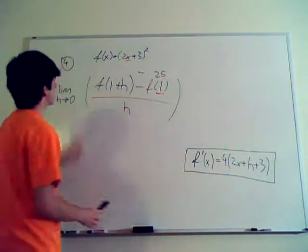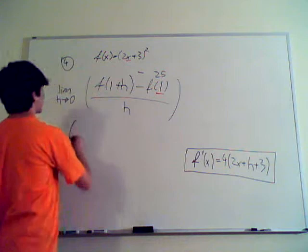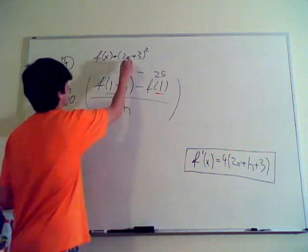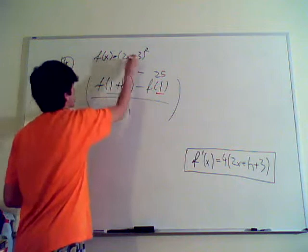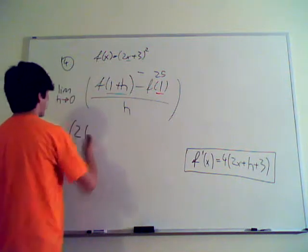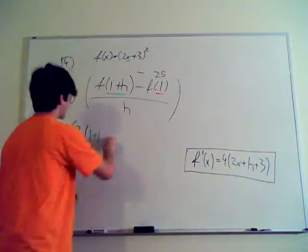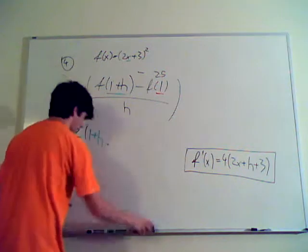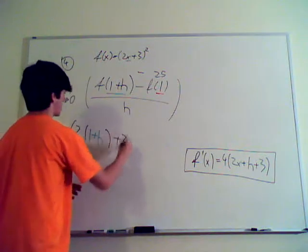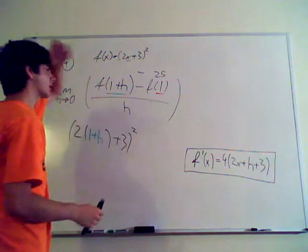Now, f of 1 plus h is the same thing as plugging this into this. So, remember what I did before when I did the h? So, now there's no more x. It's plugging this into here. So, you get 2 times 1 plus h. Damn it. Plus 3 squared. Plus 3 squared. Oh, man, I'm asked. More algebra.